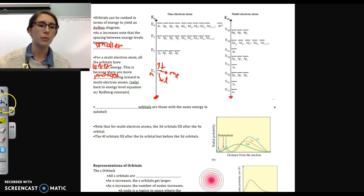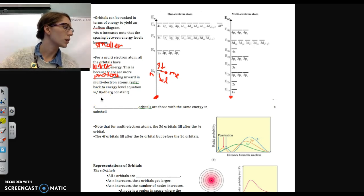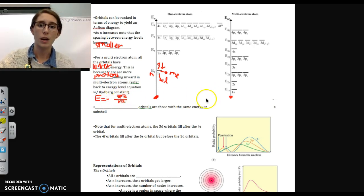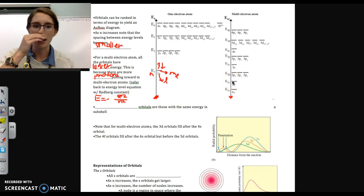And remember, if you refer back to that equation that we looked at, where it was E equals that negative constant, Z squared over N squared. And I'm just going to write this part of it, because it's what I really care about. Z squared over N squared. As Z squared goes up, our overall energy value becomes a greater negative number. So that makes sense with what we were just talking about over here.